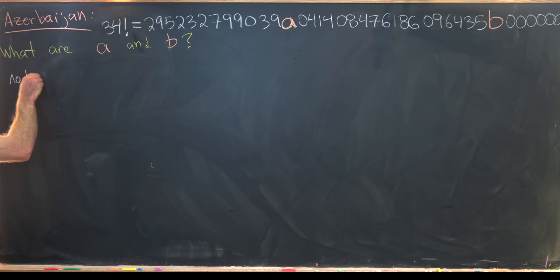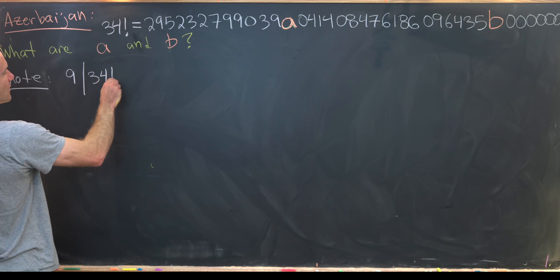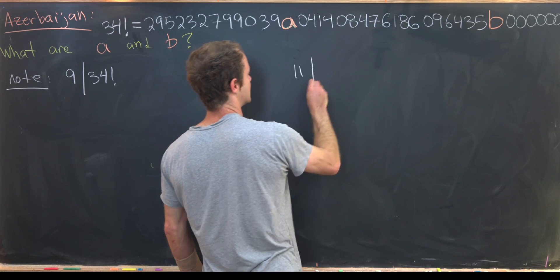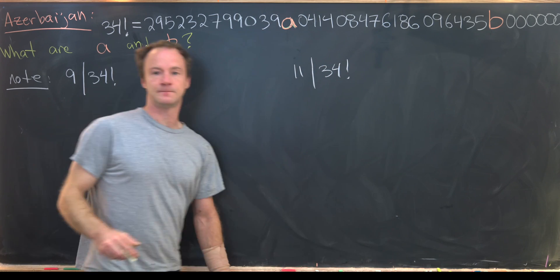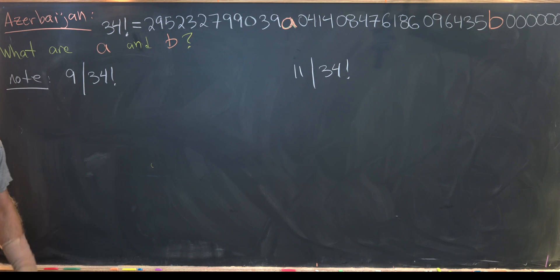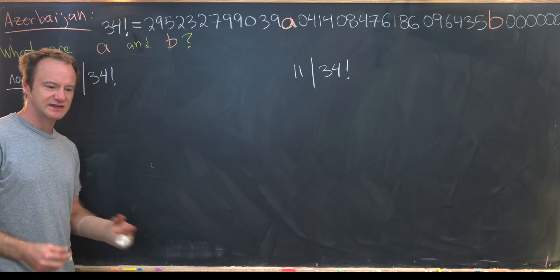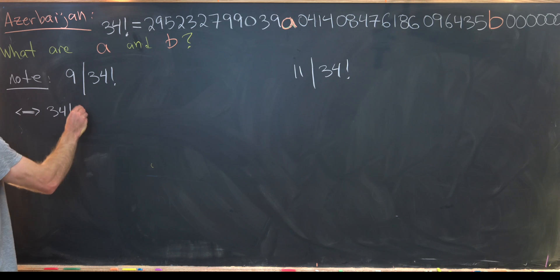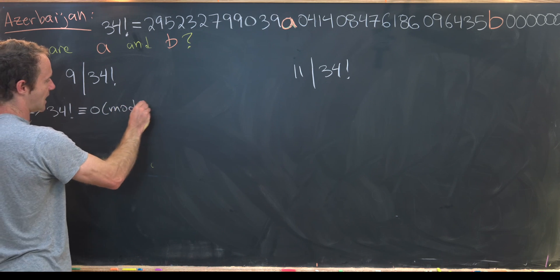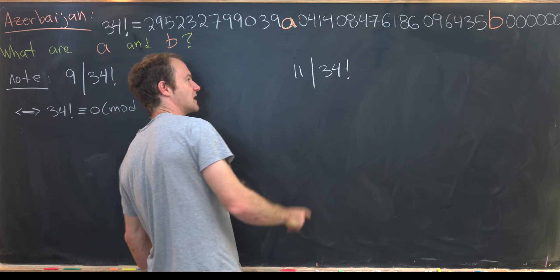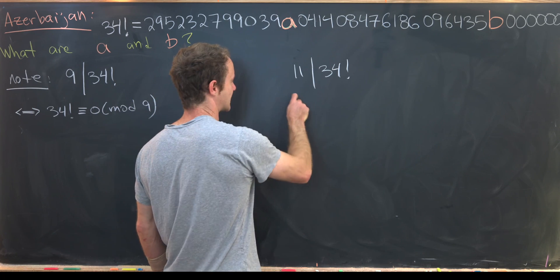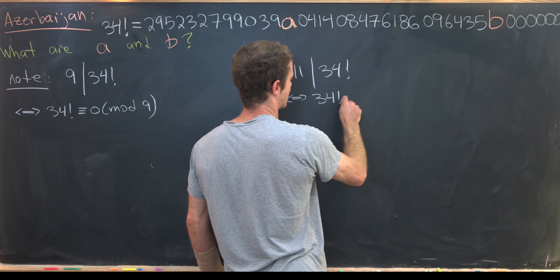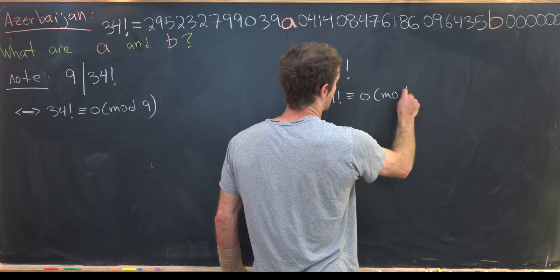So let's maybe just put that as something that we note here. So nine divides 34 factorial, and also 11 divides 34 factorial. But we're going to use the language of modular arithmetic to make this a little bit simpler. Nine dividing 34 factorial is the same thing as saying 34 factorial is congruent to 0 mod 9. Then similarly, 11 dividing 34 factorial is the same thing as saying 34 factorial is congruent to 0 mod 11.